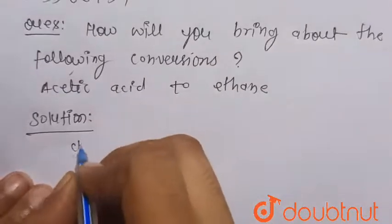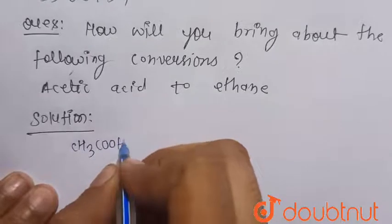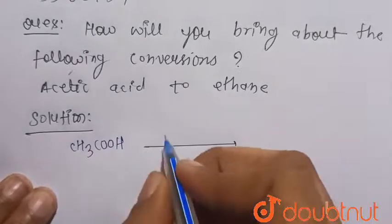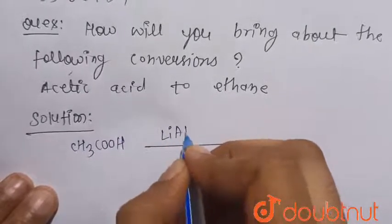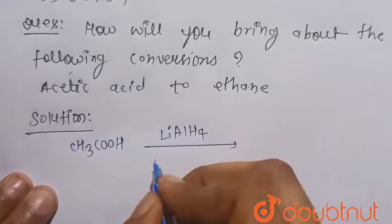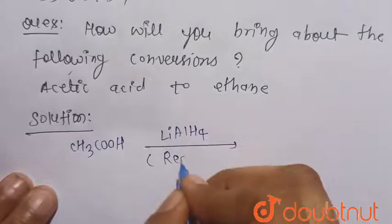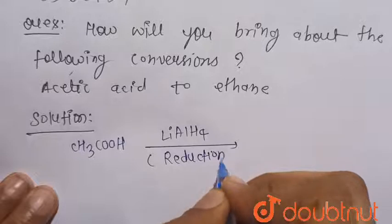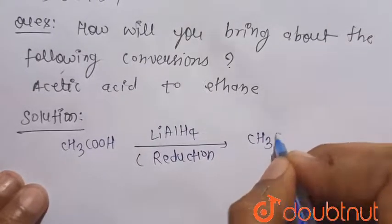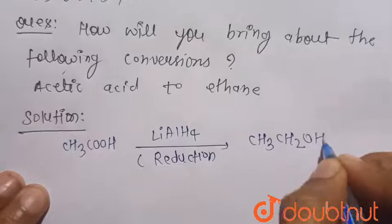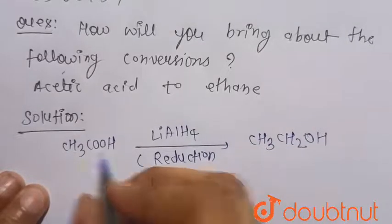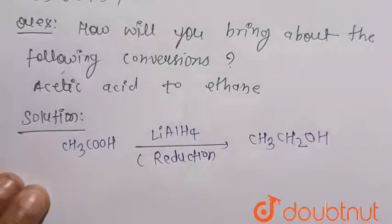So we know that acetic acid is CH3COOH. When it is treated with LiAlH4, that is lithium aluminum hydride, which is a very strong reducing agent, there will be reduction of the acetic acid directly into ethanol. It directly reduces acetic acid into ethanol.